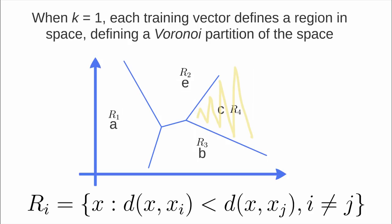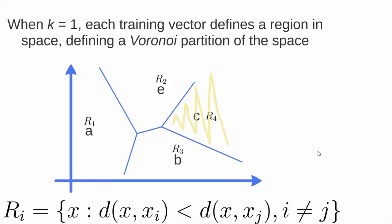We define regions 1, 2, 3, and 4 based on the nearest neighbor rule. Each element inside this area will be classified as A. Each element inside this area will be classified as C. The same applies for regions 2 and 3 for classes E and B.